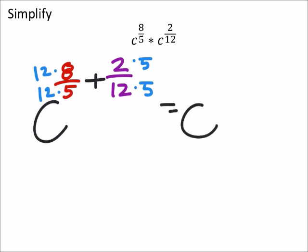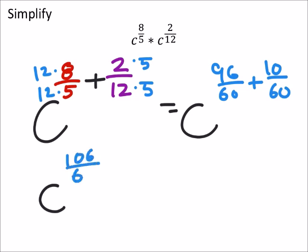So this gives me c to the power of 96 over 60 plus 10 over 60. Which would be the same as c to the power of 96 plus 10 is 106 sixtieths.